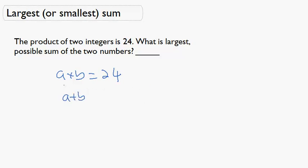The one thing we do know is that a and b are integers. So we can make a chart of factors. So a, b, and a plus b.